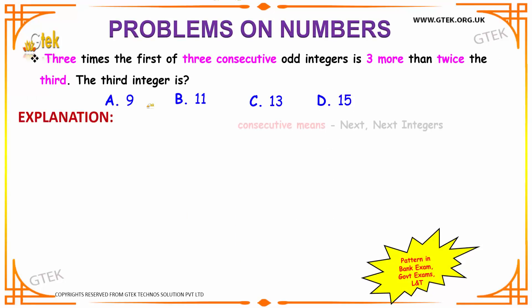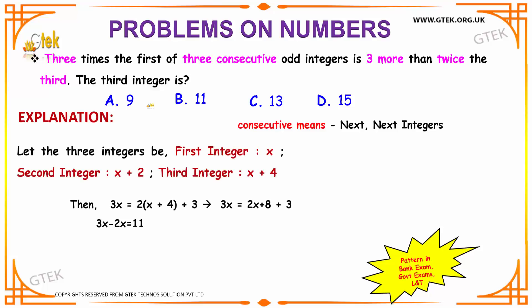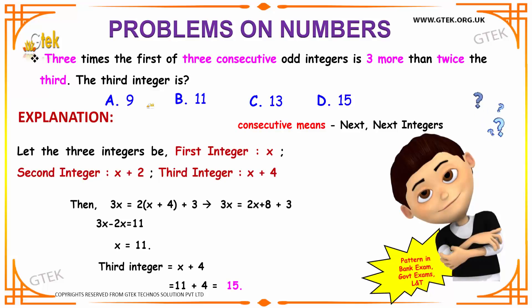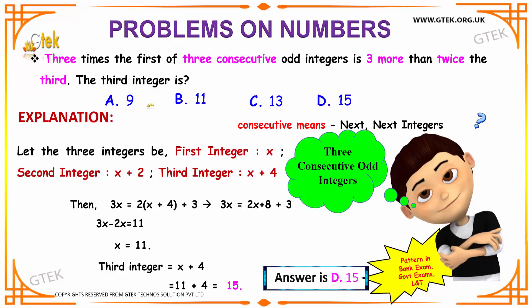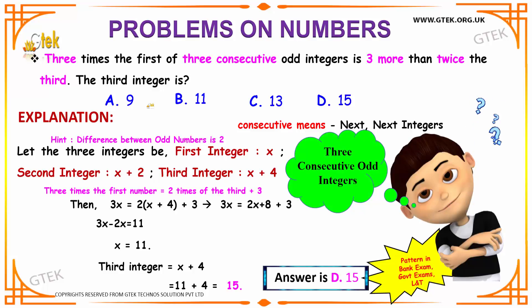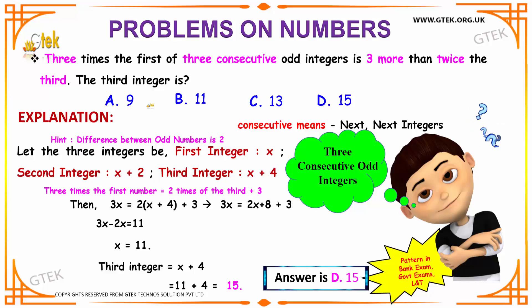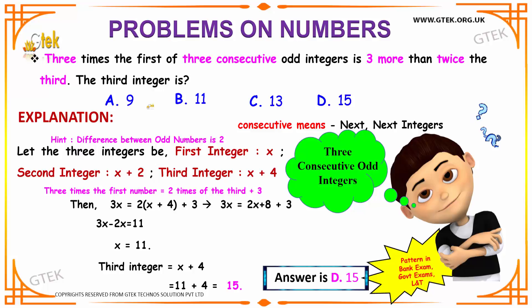Let us move on to our next interesting example. 3 times the first of 3 consecutive odd integers is 3 more than twice the third. What will be the third integer? It is given that we have 3 consecutive odd integers and the condition is 3 times the first integer will be 3 more than twice the third. Let us see the options.